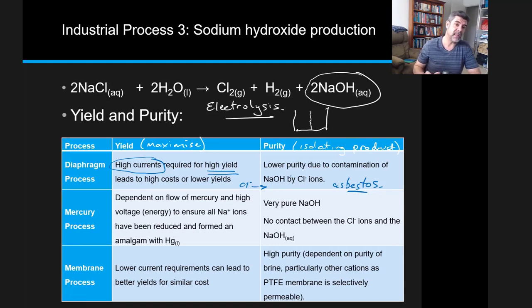Mercury is a much better process if we're looking at purity. In the mercury process, mercury is actually one of our electrodes and it forms an amalgam. This means that the sodium being produced—well, sodium is so reactive with water that it won't just sit in the water.